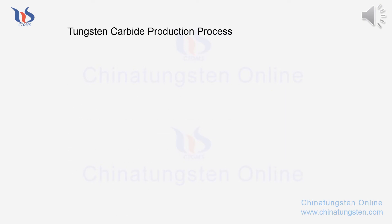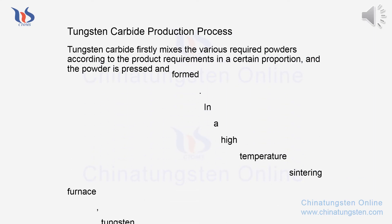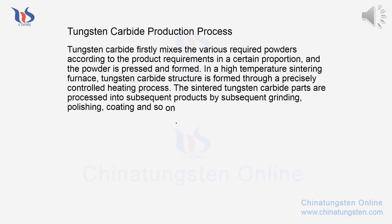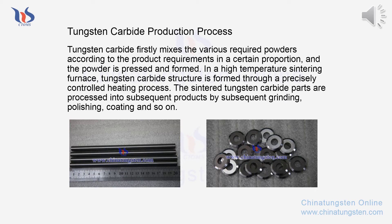Tungsten carbide production process: firstly, the various required powders are mixed according to product requirements in a certain proportion. The powder is then pressed and formed in a high temperature sintering furnace. Tungsten carbide structure is formed through a precisely controlled heating process. The sintered tungsten carbide parts are then processed into subsequent products.